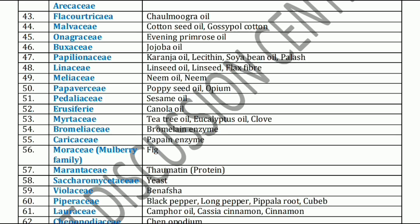Next, Onagraceae family. Onagraceae family has Evening primrose oil. Next, Buxaceae family. Buxaceae family has Jojoba oil. Next, Papilionaceae family. Papilionaceae family has Groundnut oil, Lecithin, Soya bean oil, and Pulas.